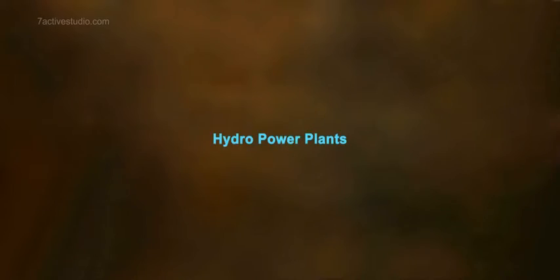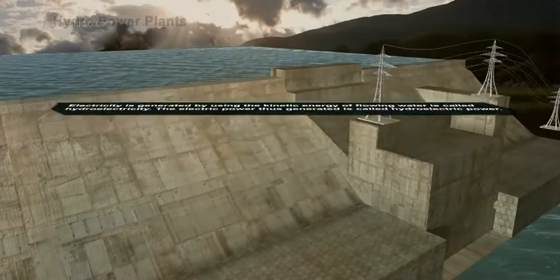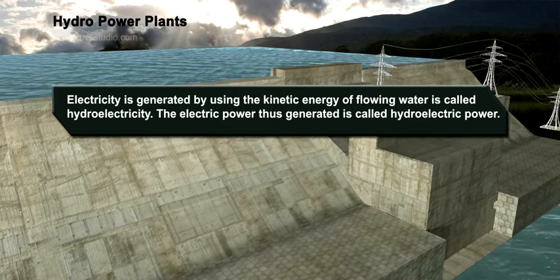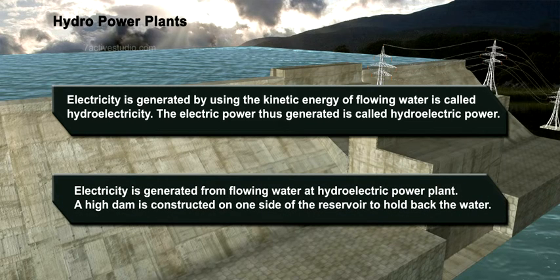Hydro power plants. Electricity generated by using the kinetic energy of flowing water is called hydroelectricity. The electric power thus generated is called hydroelectric power, and it is generated from flowing water at a hydroelectric power plant.